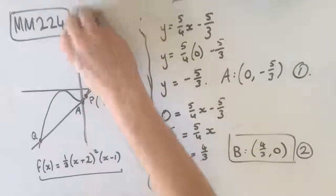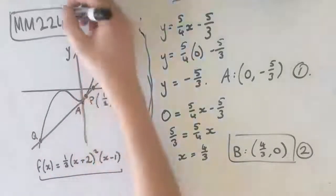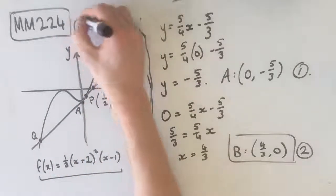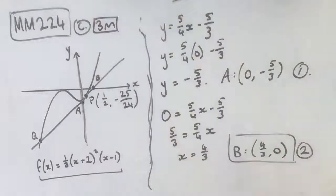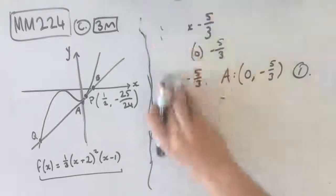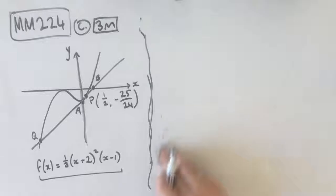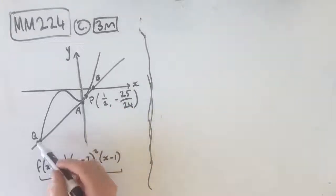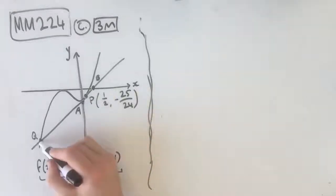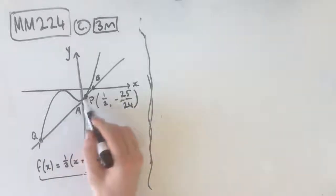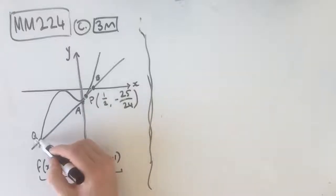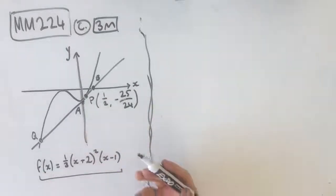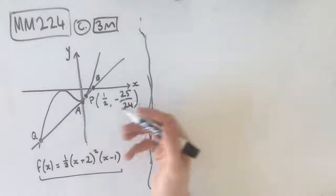Alright, so part C asks us to find the length of the line between points Q and P. Part C is three marks. P is where our tangent occurs, just here. And Q is the other point of intersection between f(x) and our tangent. So if we're going to find the length between here and here, we're first going to need to find the coordinates of this point Q, because we know our coordinates at P, but we can't possibly find the length if we don't know what these coordinates are. So let's find the coordinate of point Q.